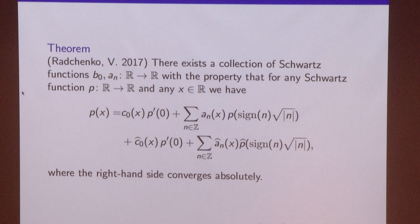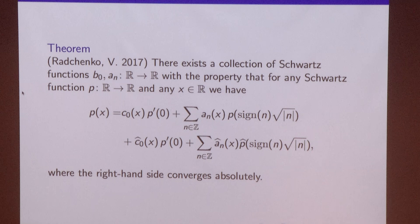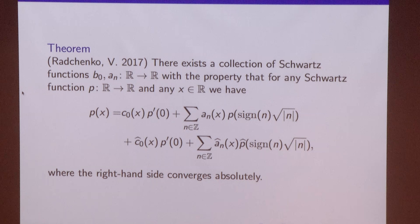The right-hand side of this sum would converge absolutely. Because now we are summing from negative and positive numbers, a complete analogy would be actually considering only even Schwarz functions, but it turns out that for odd Schwarz functions this is also true, so we can write it just for any function.